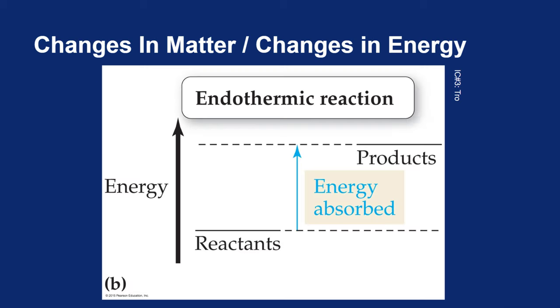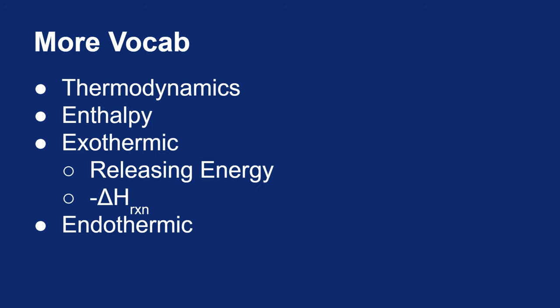Likewise, an endothermic process is one where energy is gained. More correctly, we'd say enthalpy is gained, where heat comes from the surroundings and is stored within the products. An endothermic process absorbs energy from the surroundings and has a positive delta H.